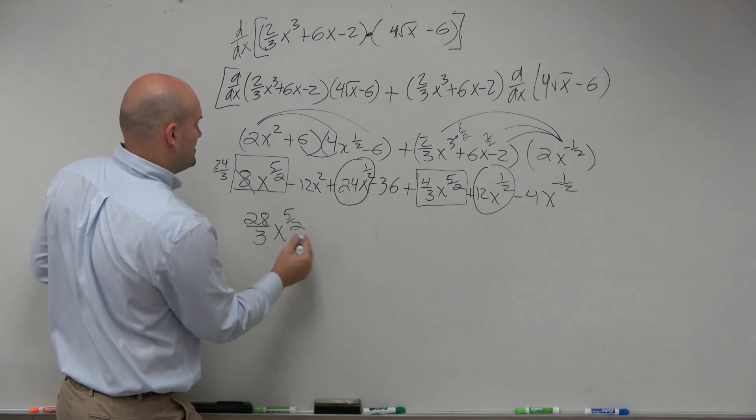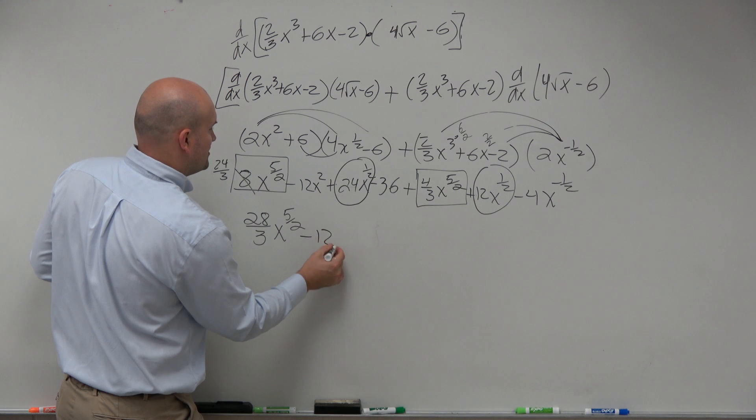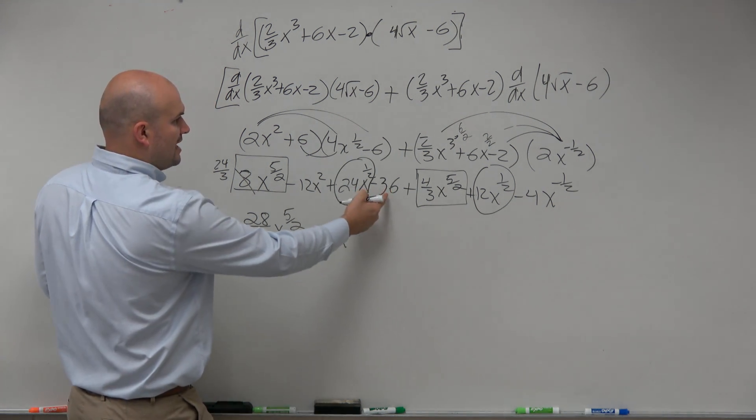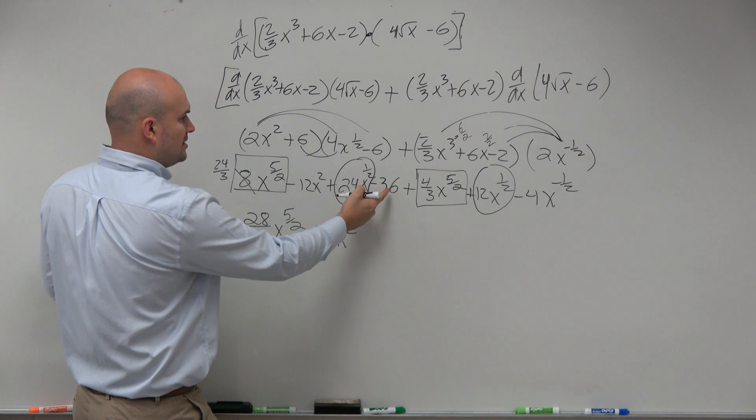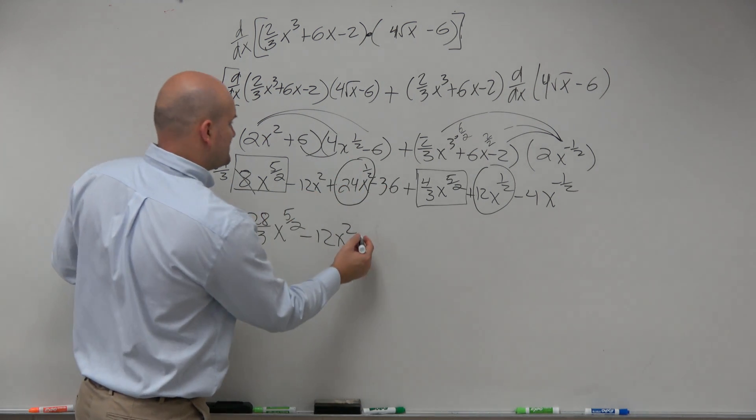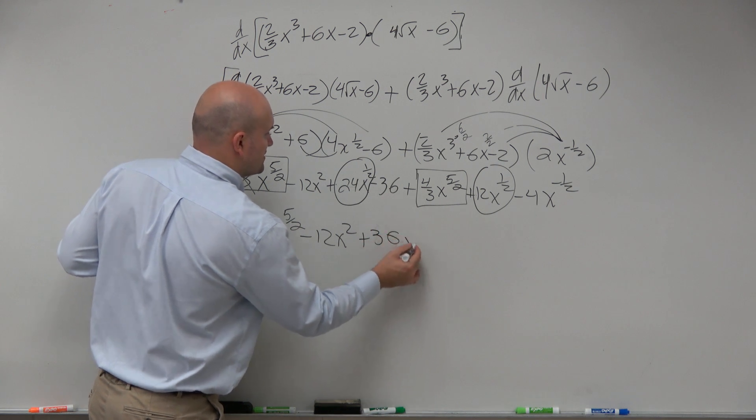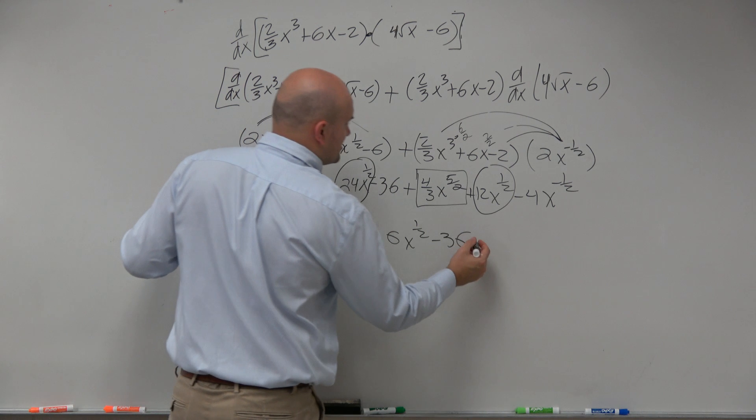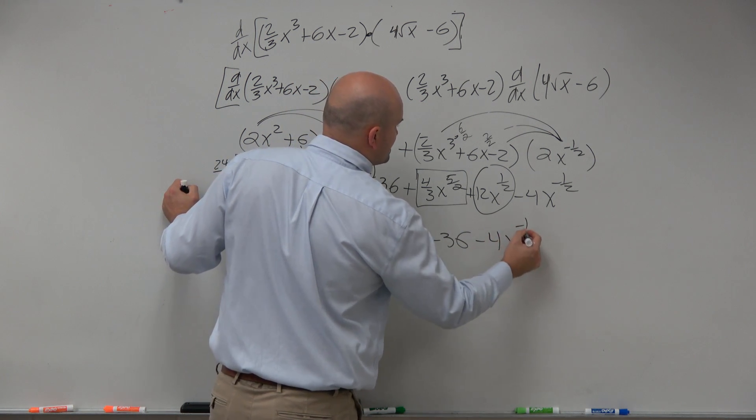And then let's kind of go in a second order here, so that's going to be then -12x². Then we'll do, that's x to the 0, so the 1/2, so 24 + 12 is going to be +36x^(1/2) - 36 - 4x^(-5).